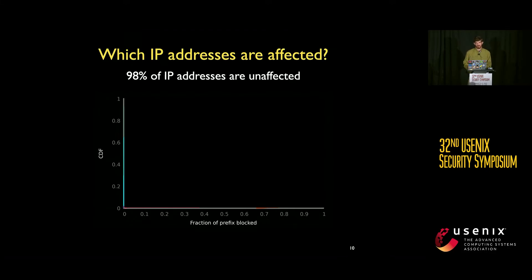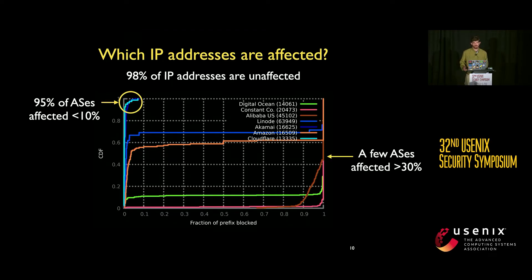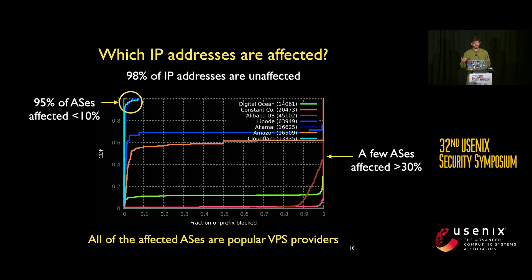We then investigated which IP addresses are affected. An internet-wide scan found that 98% of all IP addresses don't experience this form of blocking at all. However, breaking results down by autonomous system, we find that 95% of ASes have less than 10% of their IPs affected, while for a few ASes, over 30% of IPs are affected. Notably, the affected ASes are all popular VPS providers such as DigitalOcean, Akamai, and AWS — where many operators of circumvention tools host their services.